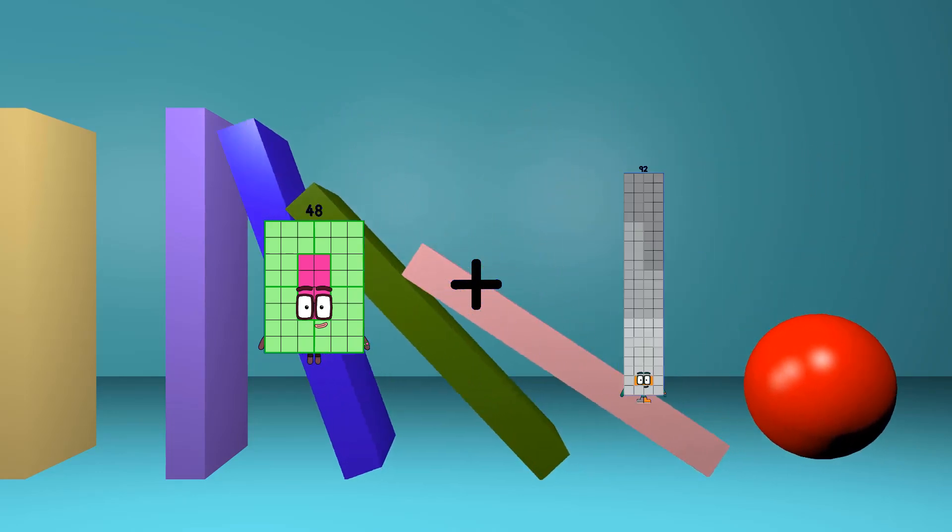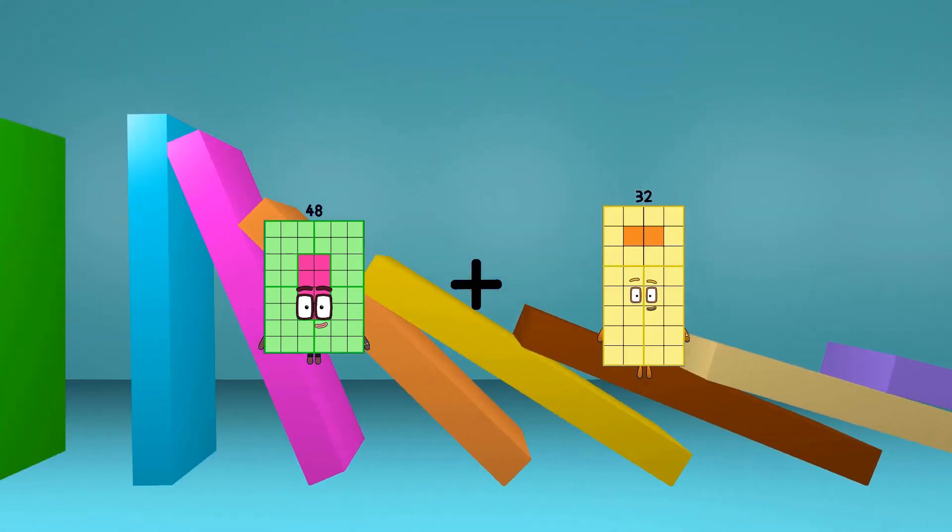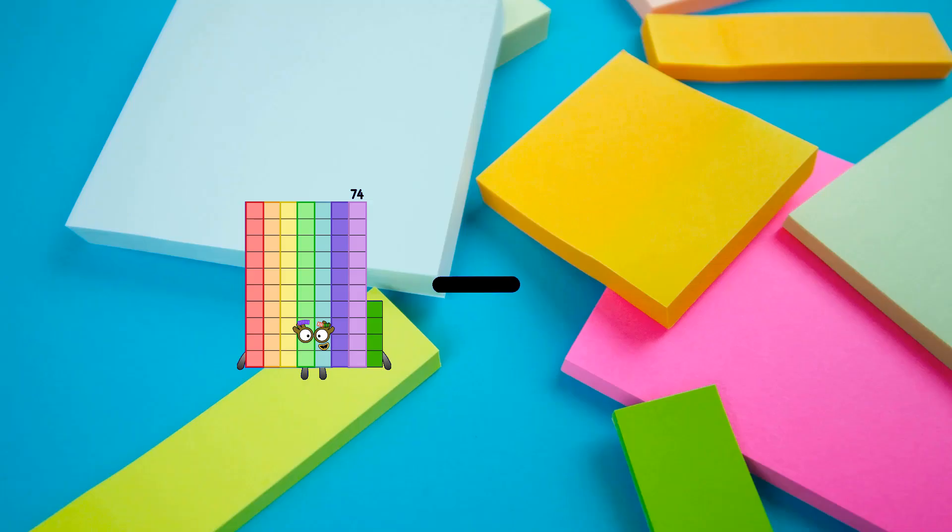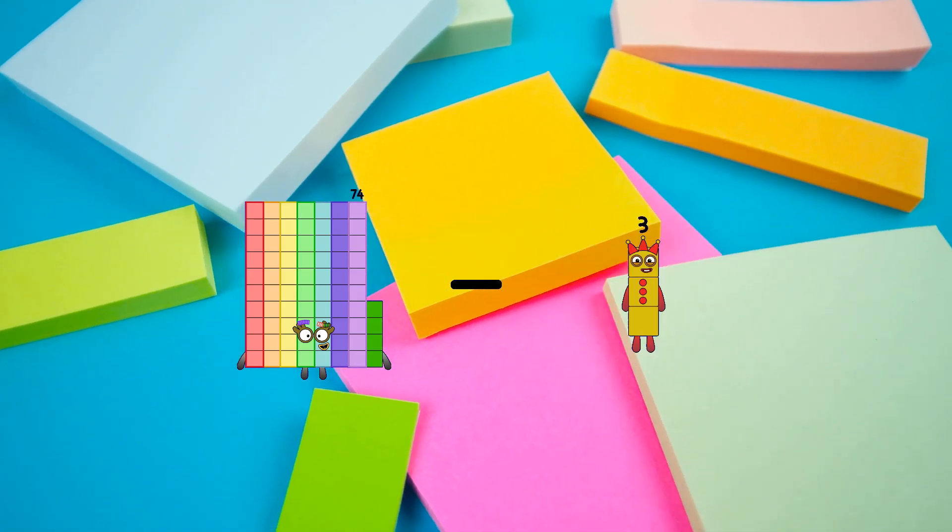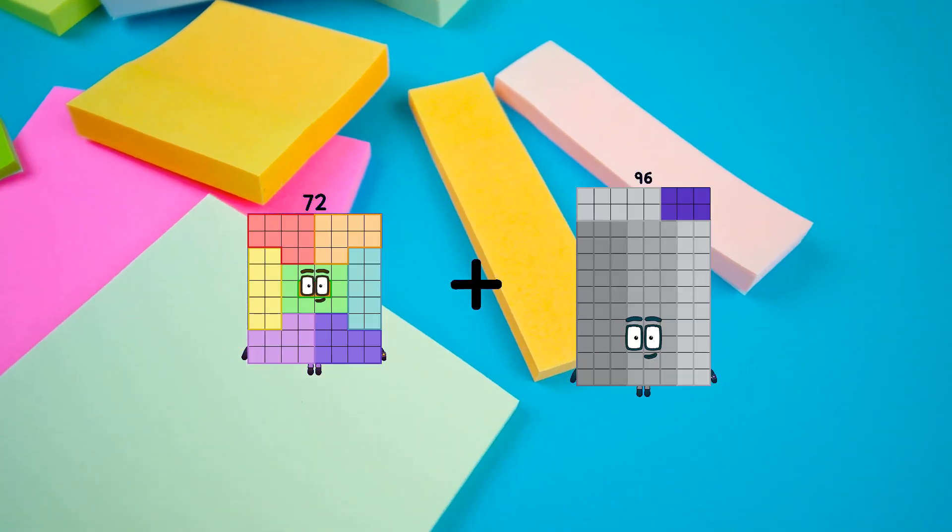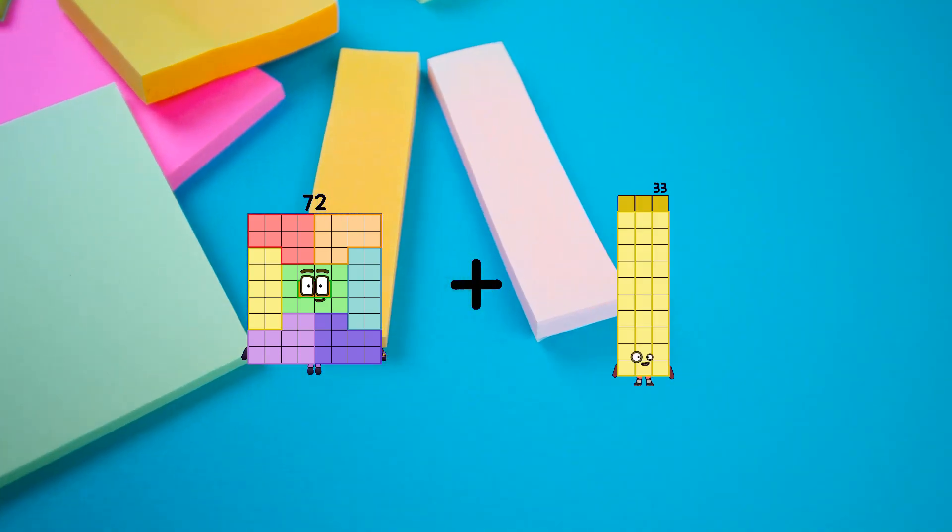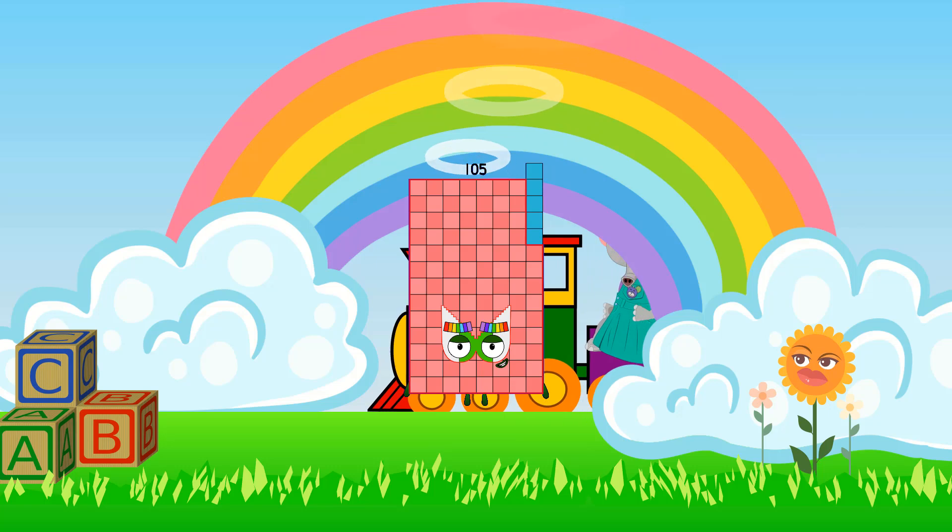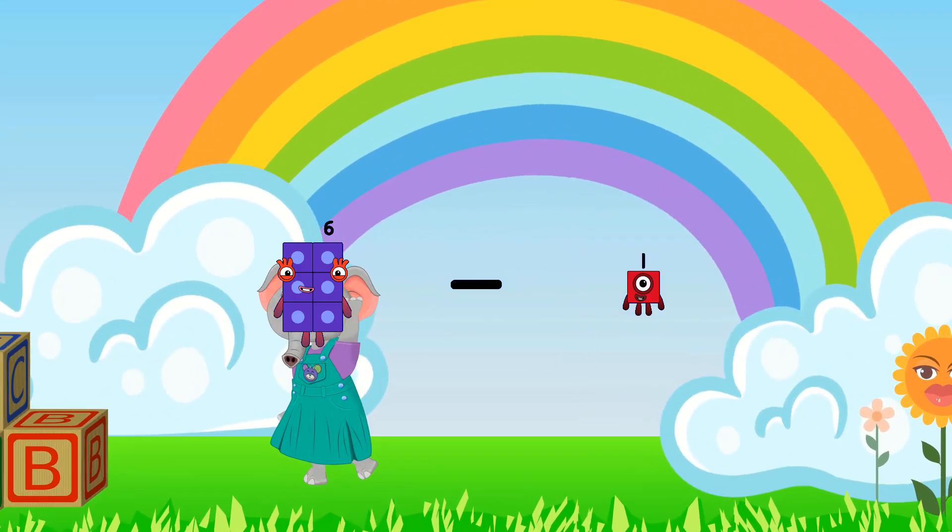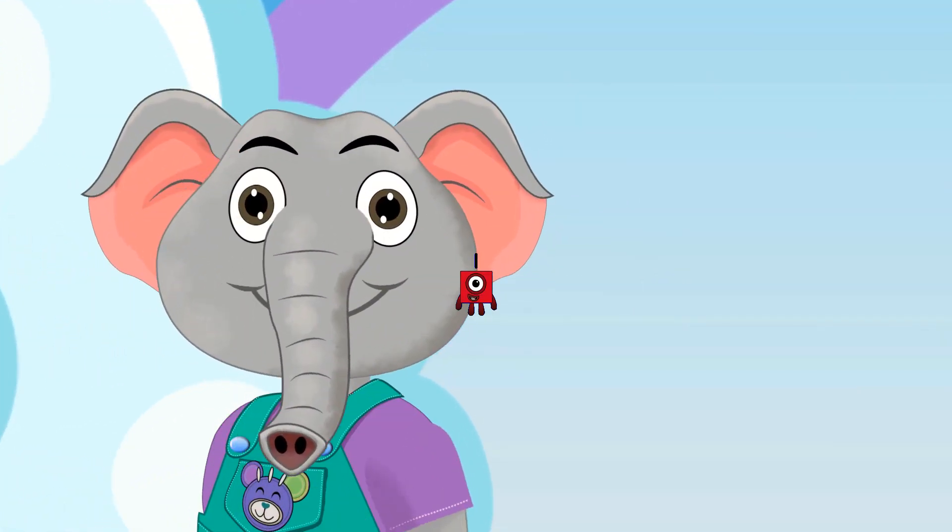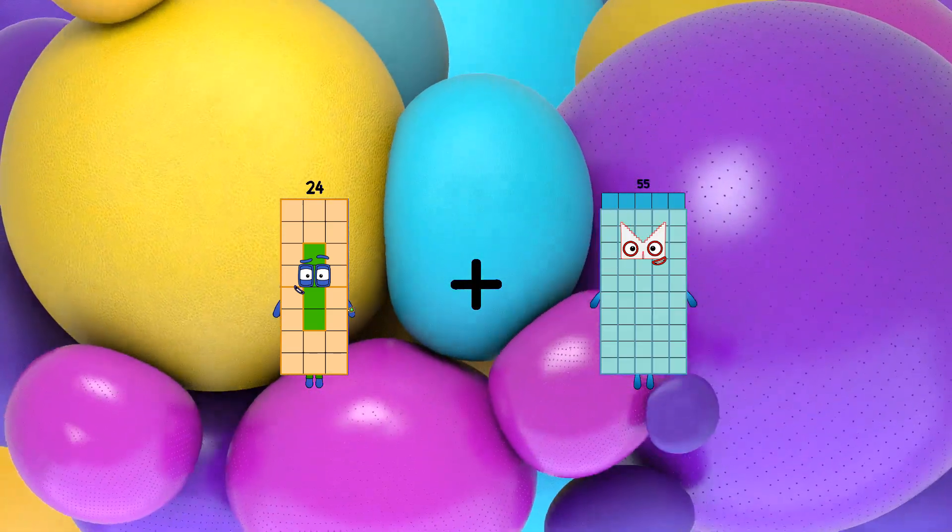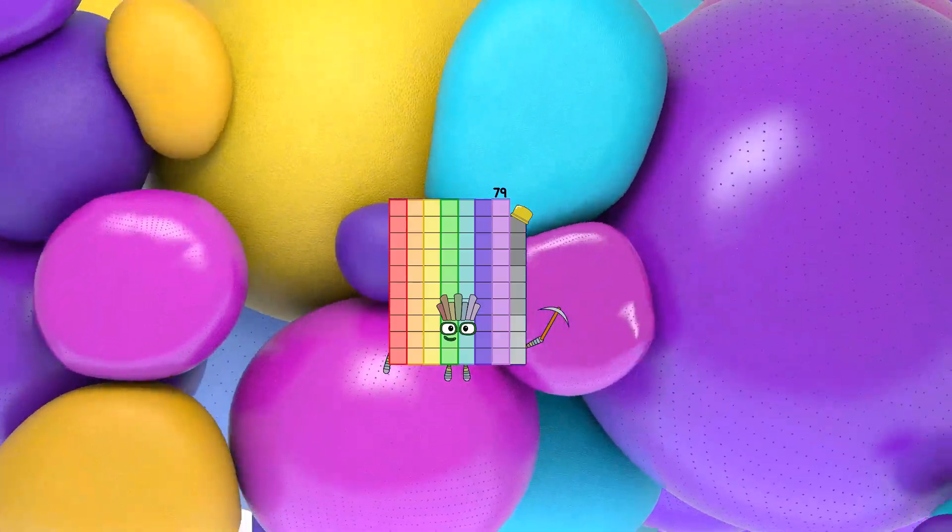48 plus 32 equals 80, 74 minus 6 equals 68, 72 plus 33 equals 105, 6 minus 5 equals 1, 24 plus 55 equals 79.